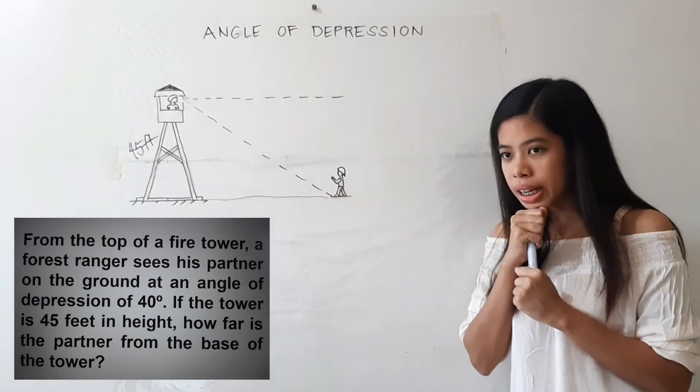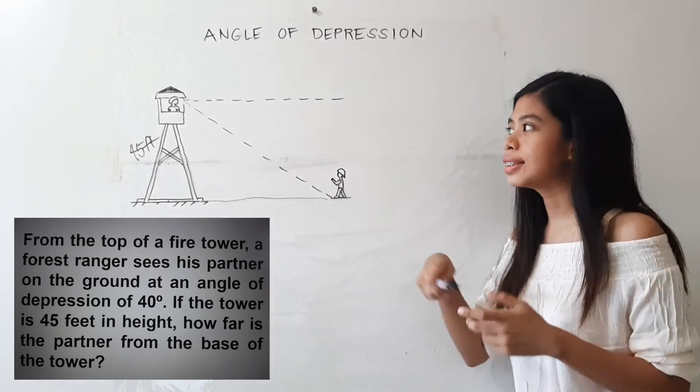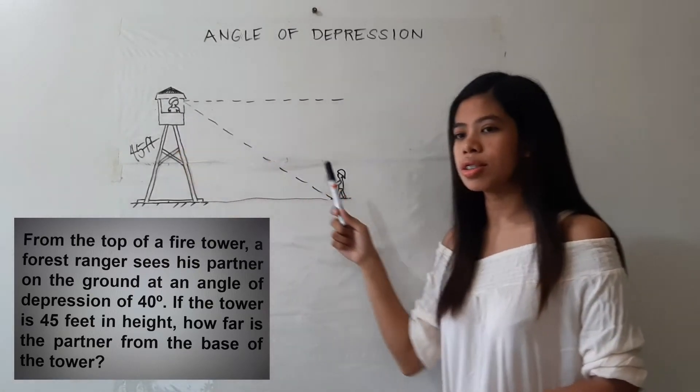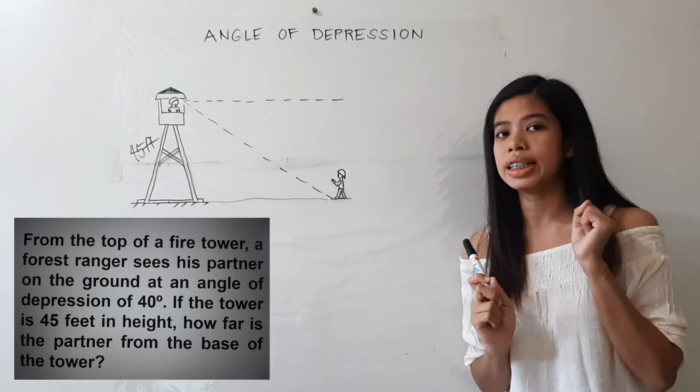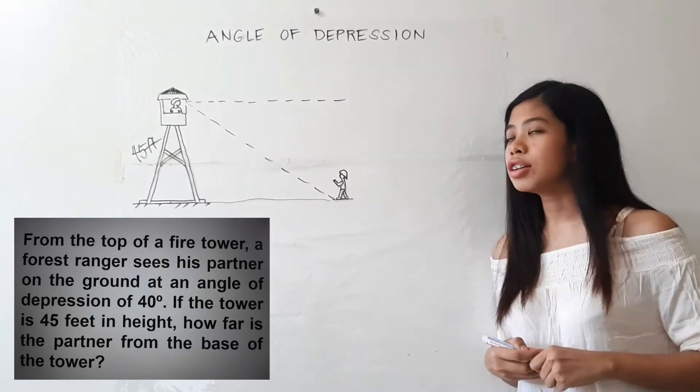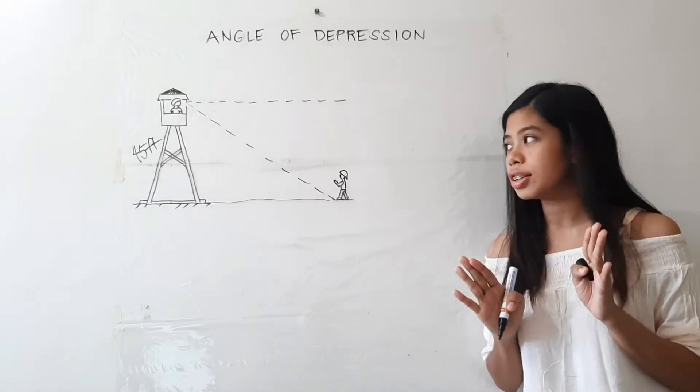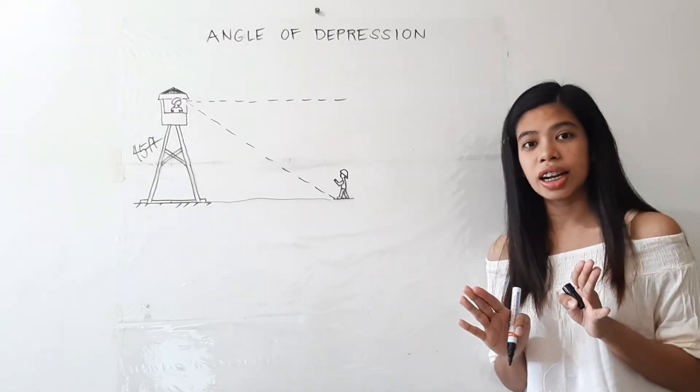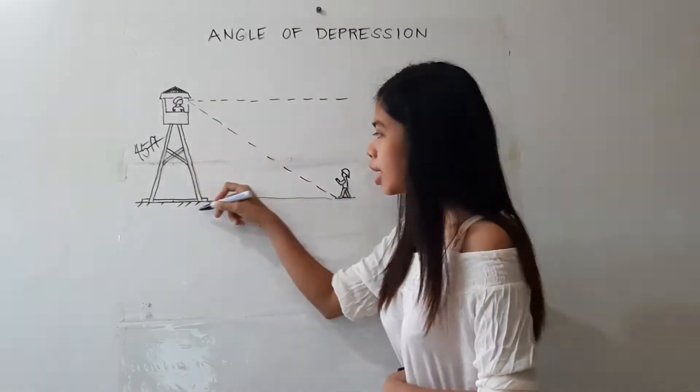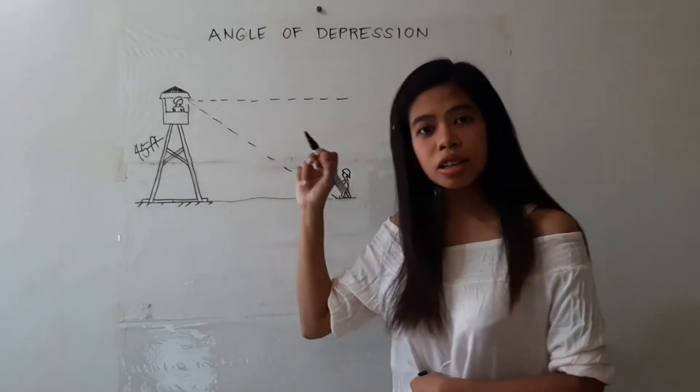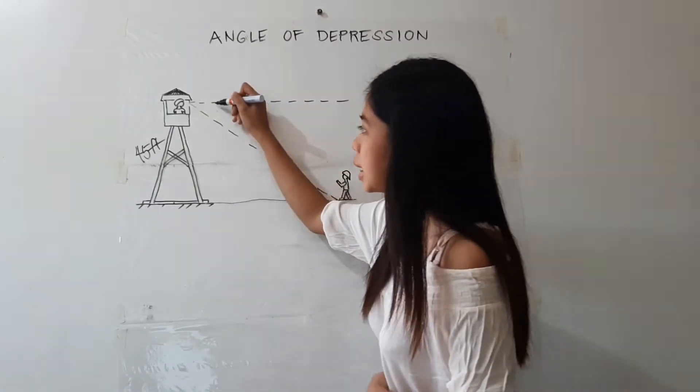Again, a forest ranger sees his partner on the ground at an angle of depression of 40 degrees. Take note of this: angle of depression is never inside the triangle. So if this is the triangle, the angle of depression is located here.